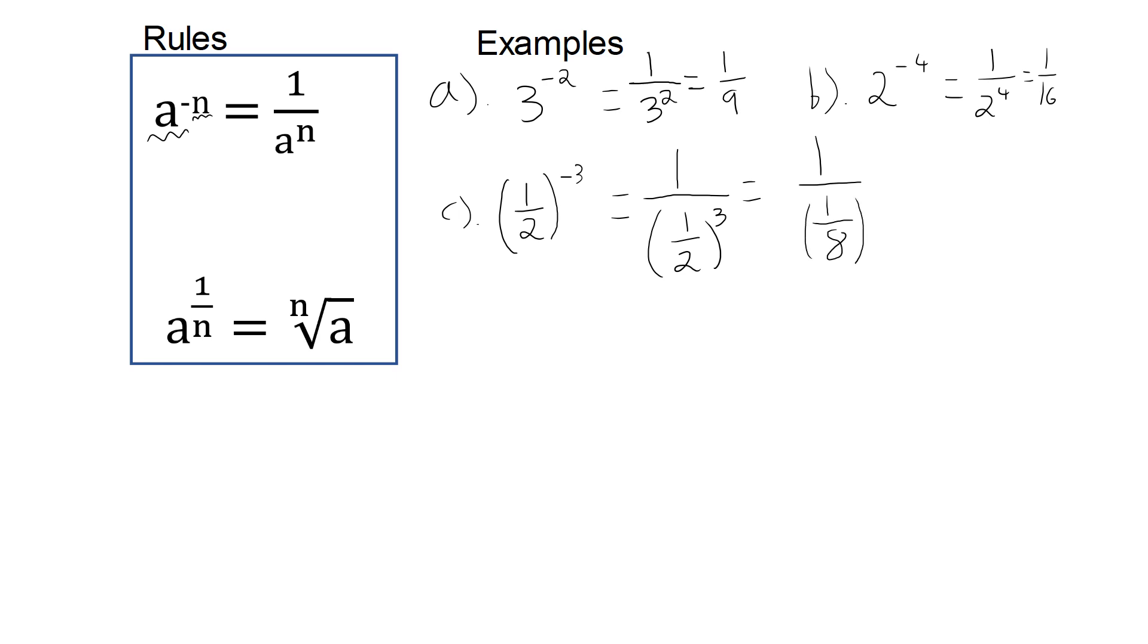Now, we can't really have a fraction within a fraction. So we need to make the denominator into a whole number. And to do this, we would just multiply it by 8. And then we multiply the numerator by 8 as well in order to keep the fraction the same. So we have 8 over 1 eighth times 8. 1 eighth times 8 is just 1. So we end up with 8 over 1, which is 8.